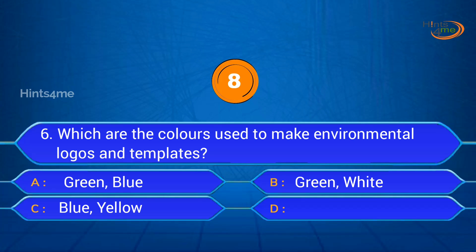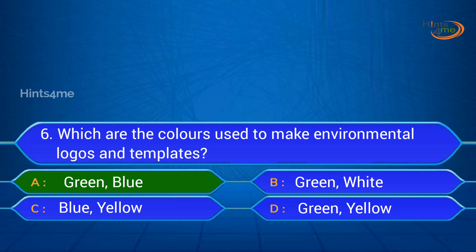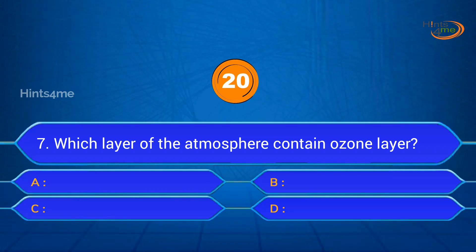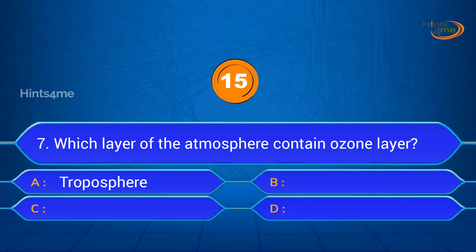Question 6: Which colors are used to make environmental logos and templates? A. Green, B. Green Blue, C. Blue Yellow, D. Green Yellow. Answer: Green Blue.